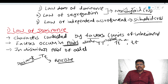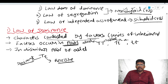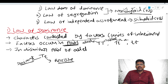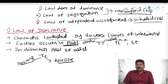To summarize the law of dominance: first, characters are controlled by factors, which are units of inheritance. Second, factors occur in pairs. Third, in a dissimilar pair of alleles, one is called dominant and another is called recessive.